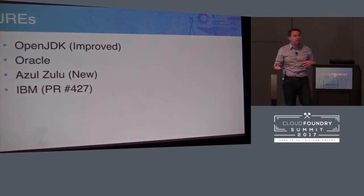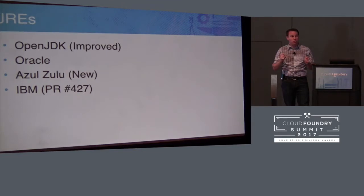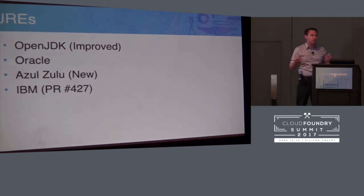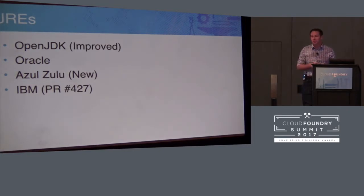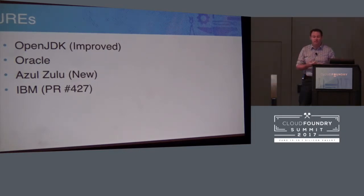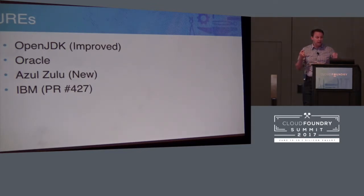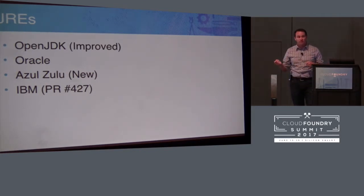Breaking down what happened in the last year: starting with the JRE, OpenJDK has been drastically improved. Our version of OpenJDK that we build and distribute as part of the platform comes with unlimited crypto strength - you can have 16k RSA keys with no limitations, no workaround for Oracle's downloads needed. We've also integrated Oracle JREs, and Azul contributed the Zulu JRE. IBM's J9 JRE is also finishing up in a PR submission and will be an option inside the core Java build pack.